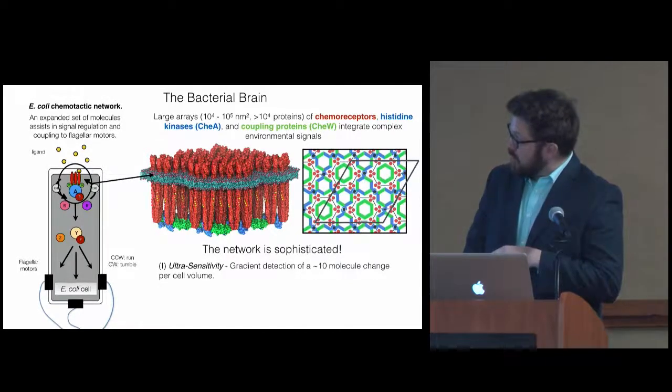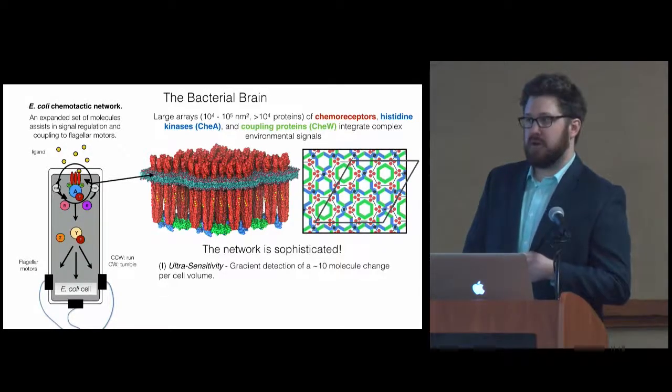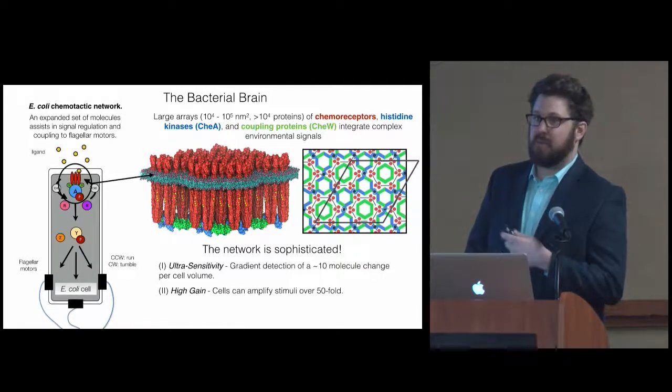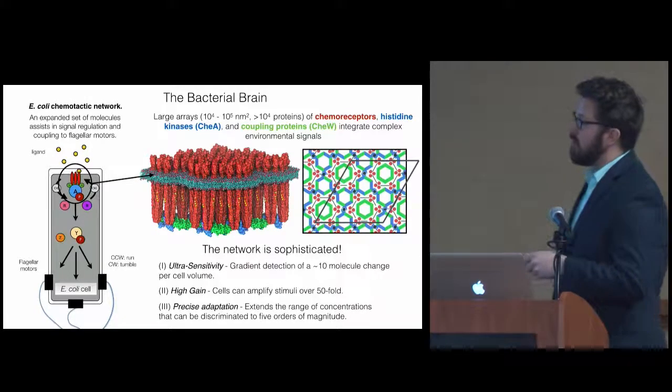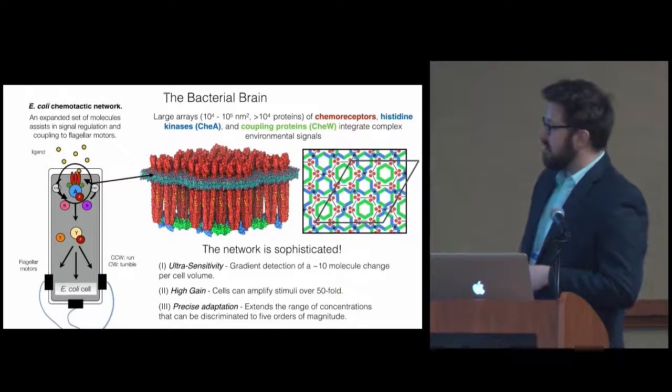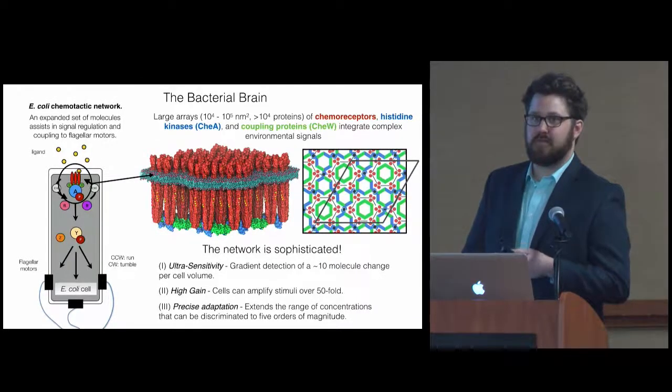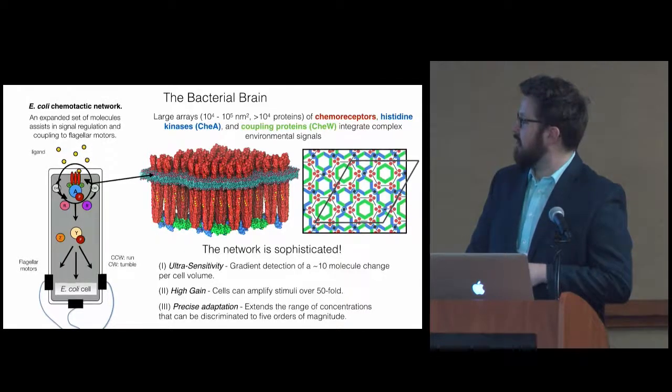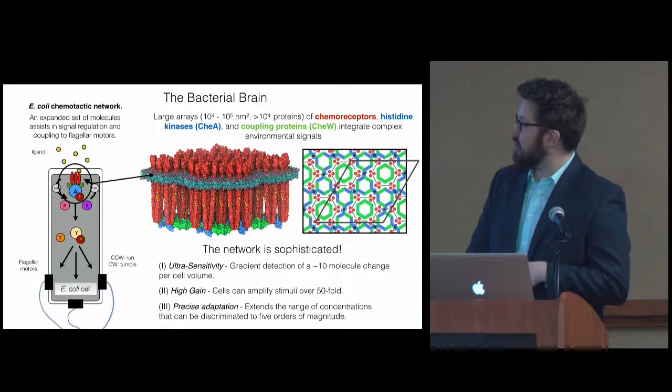What this extended architecture does here is basically endow this network with enhanced information processing features. The network is ultra-sensitive, so cells can sense less than a 10-molecule change per cell volume. In addition, high gain basically allows these cells to amplify these signals more than 50-fold. And precise adaptation through the chemical modification of the receptors themselves extends the range of concentrations which the cell can respond to sensitively to over five orders of magnitude. So it's really a very sophisticated biocomputer. That's where the brain comes in, although this is mechanical as opposed to electrochemical-based.